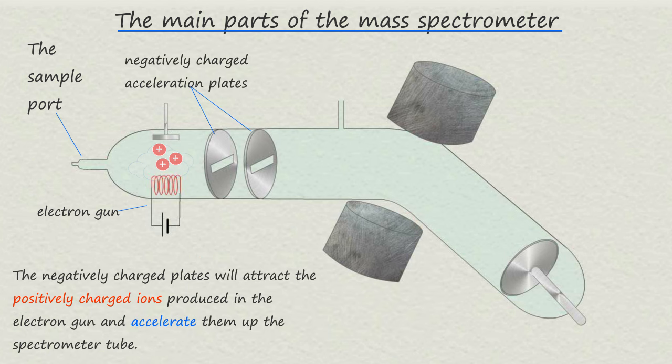Next is the acceleration plates. These are negatively charged metal plates which will attract the positively charged ions formed during the ionization step.